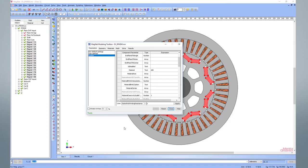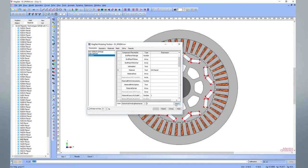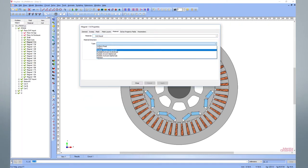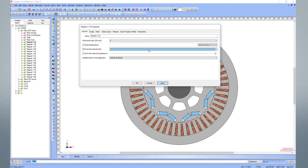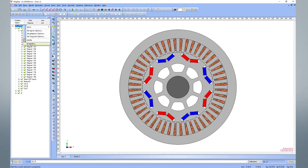We set up the magnet using the modeling toolbox. You can also change the colors of the magnet to later identify the north-facing and south-facing poles.